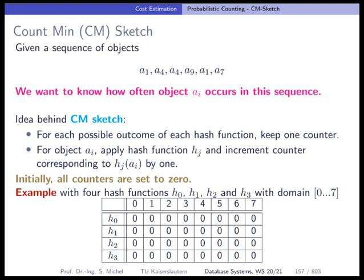Another very famous sketch is the so-called Count Min sketch. In contrast to the previous two sketches, the Count Min sketch does not compute an estimate for the number of distinct elements, but computes an estimate for the number of occurrences of a specific object.